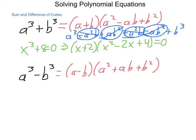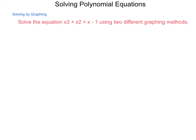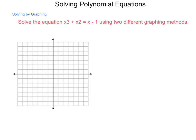Now, how would we solve some of these by graphing? We're going to solve x cubed plus x squared equals x minus 1 using two different graphing methods. The first method is to graph them as two separate equations and see where they intersect. The right-hand side, x minus 1, has a y-intercept of negative 1 and a slope of positive 1 — just a line. The left-hand side, x cubed plus x squared, factors as x squared times x plus 1, giving a zero at negative 1 and a zero of multiplicity 2 at 0.